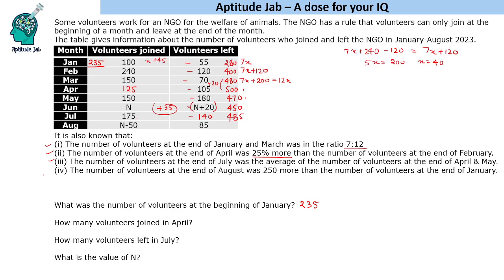The number of volunteers at the end of August was 250 more than at the end of January. January was 280, so August is 530. That is an increase of 45 from July. N minus 50 join and 85 leave in August, so N minus 135 equals 45, giving N = 180.